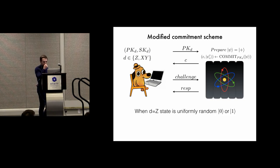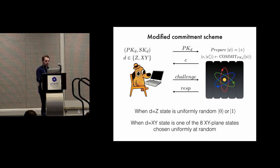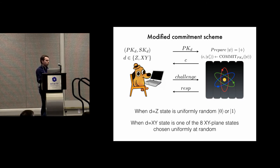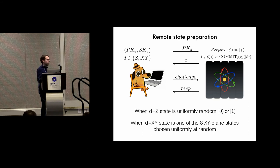The end result is that when the verifier chooses the z direction, the state the prover will end up having is uniformly at random either 0 or 1. If the verifier chose the equatorial plane (xy), it will get one of the eight equatorial states uniformly at random. Crucially, the prover will not know what state it got at the end of the interaction with the verifier. This is what we call remote state preparation.